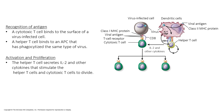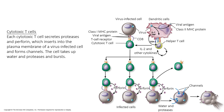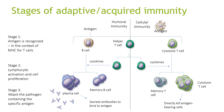Putting it all together: a cytotoxic T cell binds to the surface of a virus-infected cell. A helper T cell binds to an antigen-presenting cell that has phagocytosed the same type of virus. The helper T cell secretes IL-2 and other cytokines that stimulate helper T cells and cytotoxic T cells to divide. The cytotoxic T cell secretes proteases and perforin, which inserts into the plasma membrane of the virus-infected cell forming channels — the cell takes up water and proteases and bursts. Cytotoxic T cells with cytokines can become either memory T cells or cytotoxic T cells directly killing antigen-bearing cells. B cells can either become plasma cells to secrete antibodies or become memory B cells.